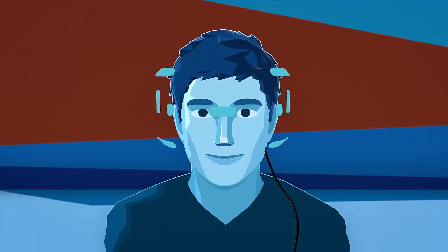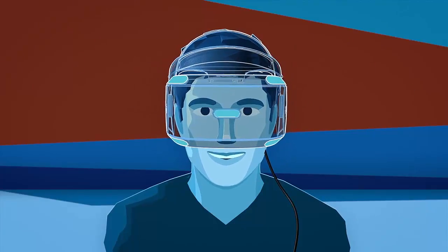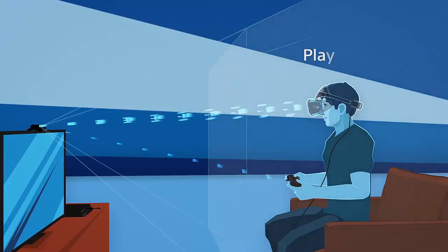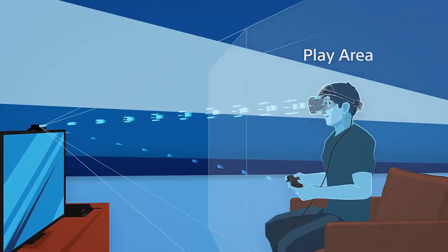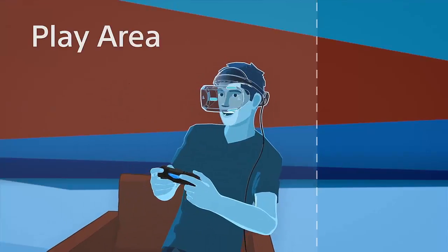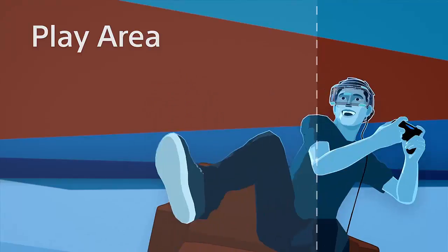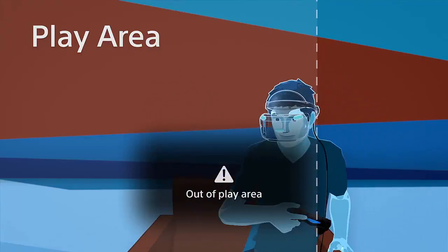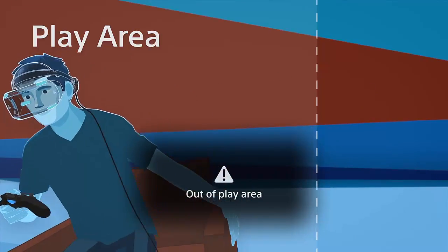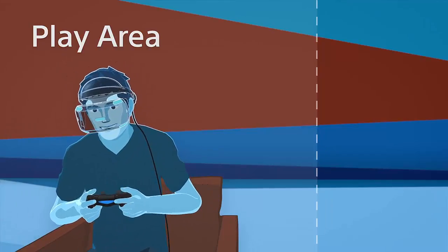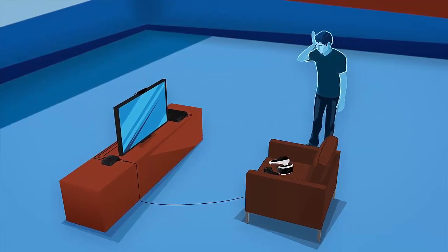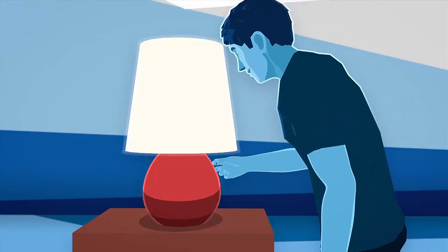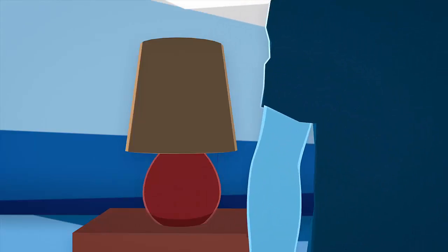The 9 tracking lights on the PSVR headset track your movement in correlation with the camera during your virtual reality experience. If you happen to stray outside of the play area, you'll receive a pop-up warning, prompting you to return to the suggested location within this designated space. Try to limit any light sources directly behind you. They might throw off the headset's tracking capabilities.